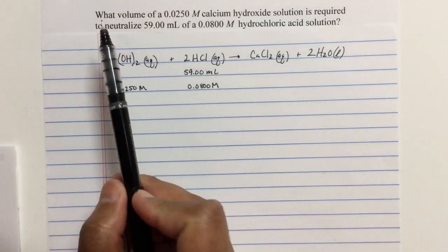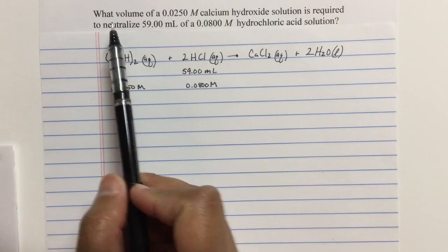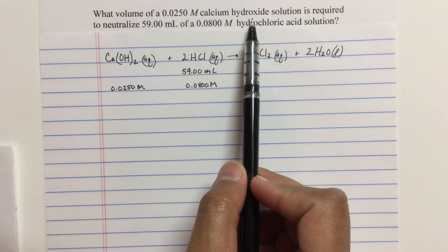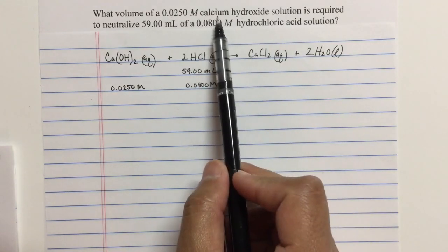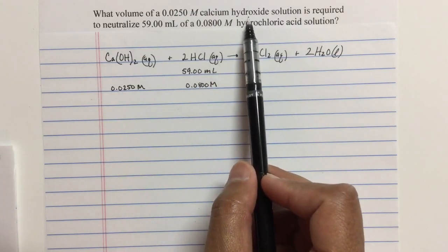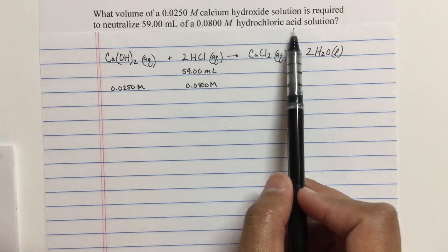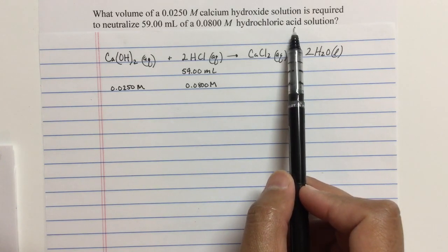In this case, you'll notice there's calcium hydroxide that is reacting with hydrochloric acid. Calcium hydroxide - hydroxide is the base. Hydrochloric acid, of course, is the acid.